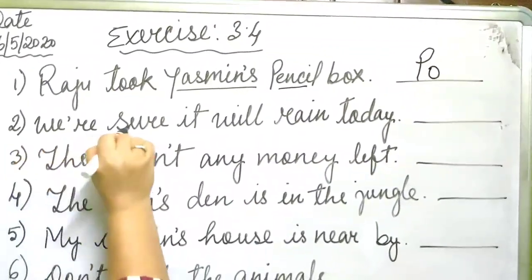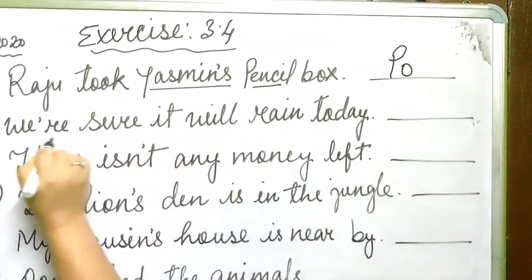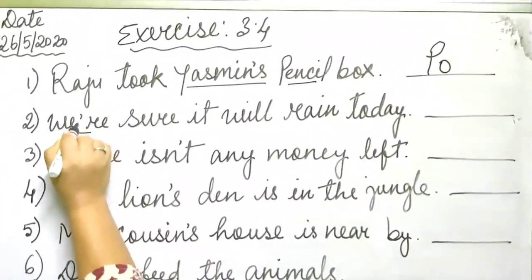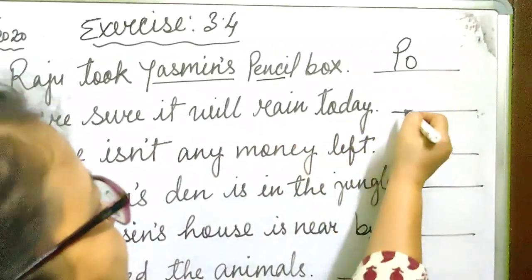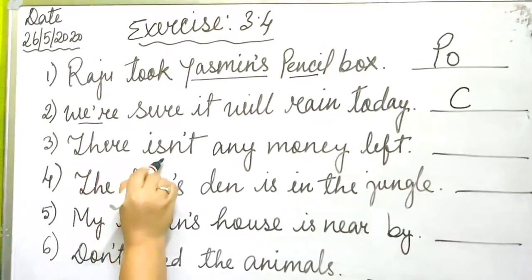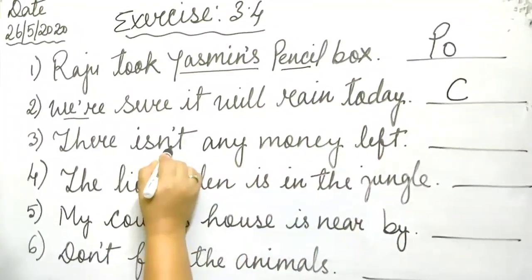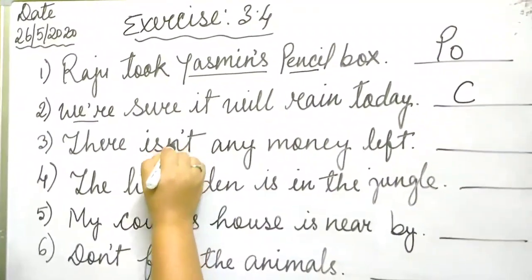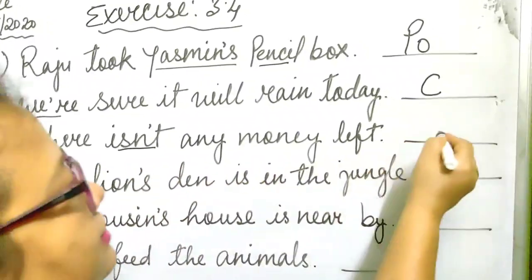We're sure it will rain today. So 'we're' is a short form — the letter is removed and apostrophe is placed. So what is this? Contraction — C. There isn't any money left. Again, the 'o' is removed from 'not' and apostrophe stays there. So what is this? Contraction — C.